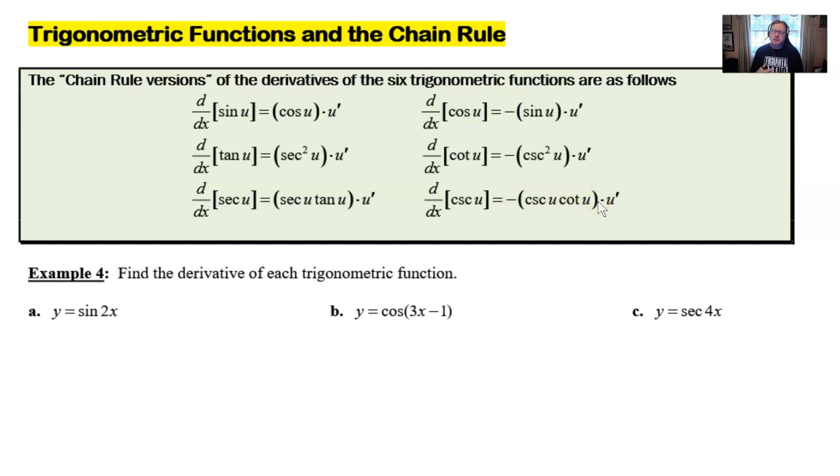To apply the chain rule, you just use the basic idea that we're going to probably be taking the derivative of the sine of something more than just x. Maybe it's a 2x, maybe it's an x squared, something along those lines. So you're going to use the basic formula and then just tack on the derivative of that u.